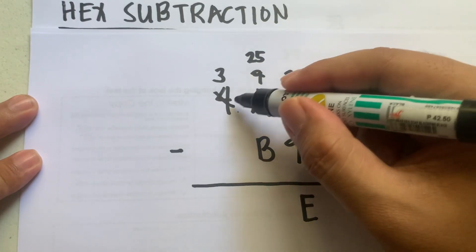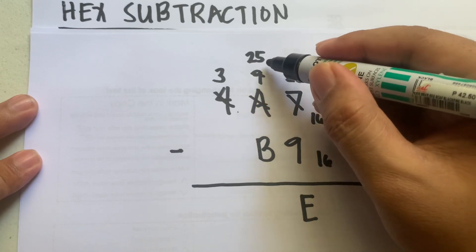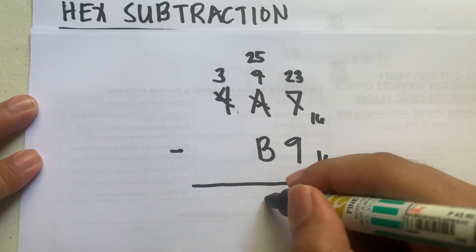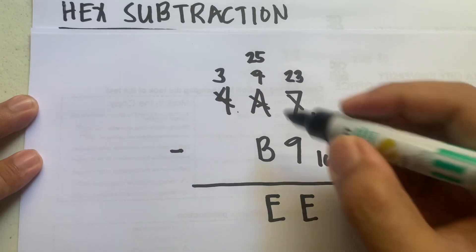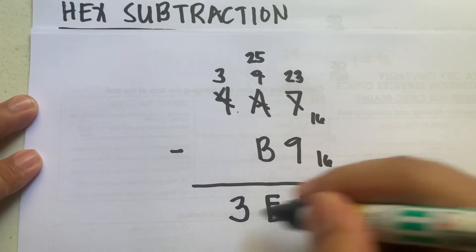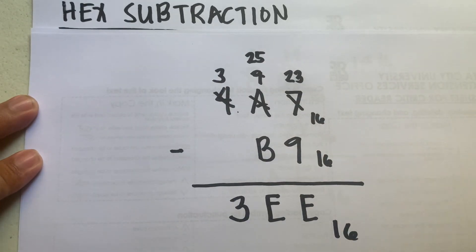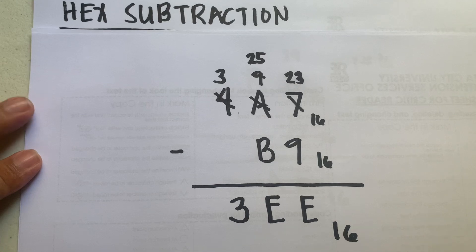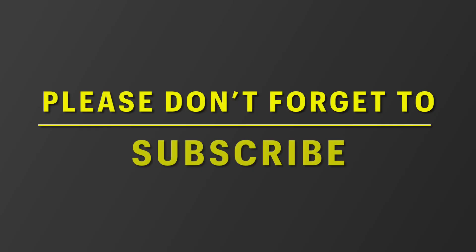because of the 16. So 25 minus 11 equals 14, which is E. Then we bring down 3, so the answer is 3EE.